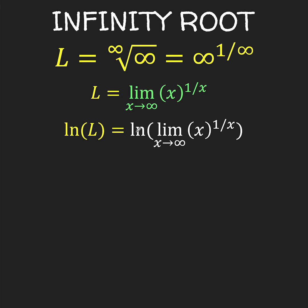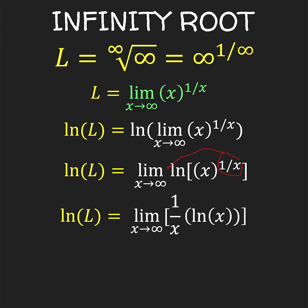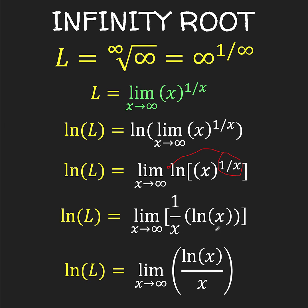We take ln of both sides. The natural logarithm is continuous for x greater than 0, and since our x value is approaching infinity, we know that ln is continuous. Therefore, ln of the limit of x raised to 1 over x as x approaches infinity is just the same as the limit of ln of x raised to 1 over x as x approaches infinity — the ln of the limit equals the limit of the ln. Then, from the properties of logarithm, this exponent 1 over x can be brought to the front, giving us 1 over x times ln of x, which simplifies to ln of x over x.